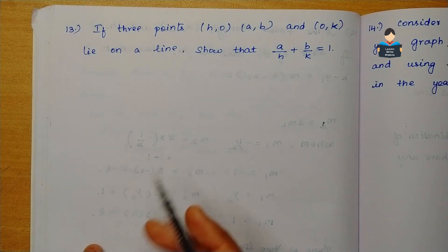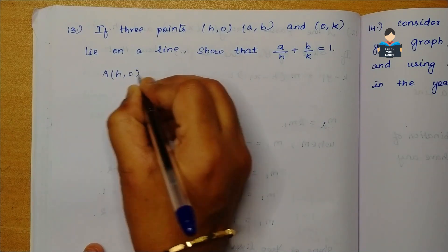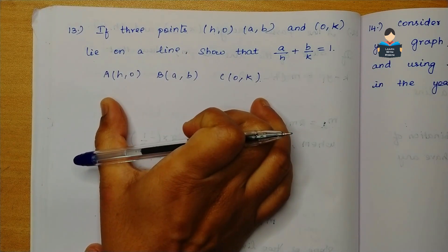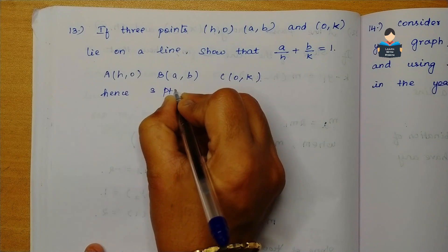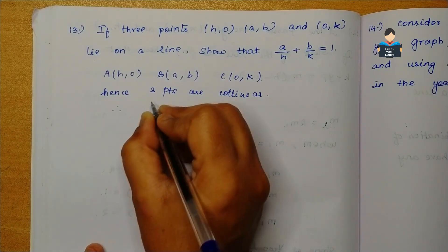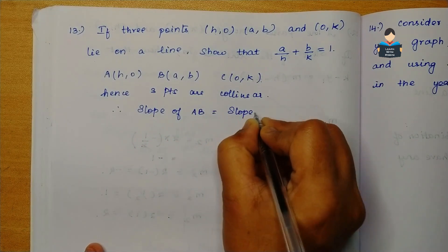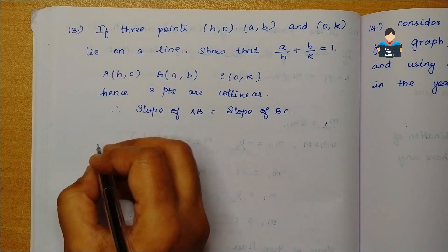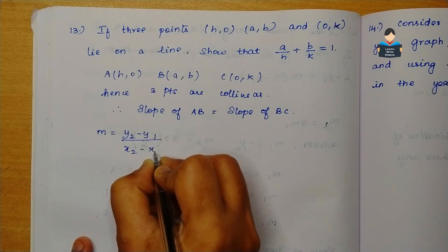Here we will prove. The 3 points H(h, 0), A(a, b), and C(0, k) lie on a line, so they are collinear. For collinear points, we use the condition: slope of AB is equal to slope of BC. We have the slope formula: m is equal to y2 minus y1 by x2 minus x1.